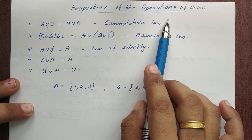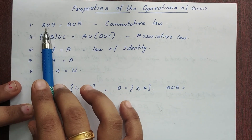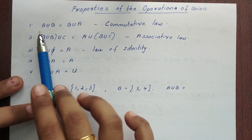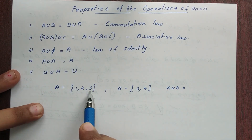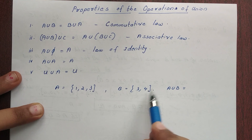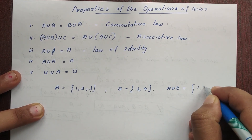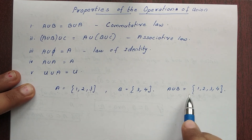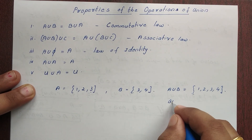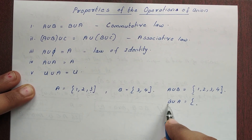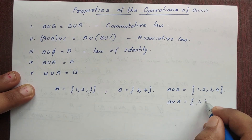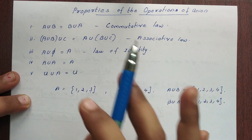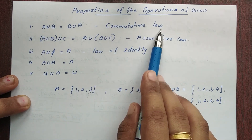In this union operation, we need to know the properties. First property: A union B is equal to B union A. This is the commutative law. A union B and B union A give the same result — they are equal. That is the commutative law.